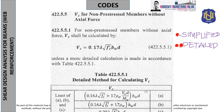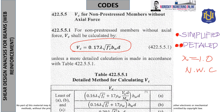Code 422.5.5.1 is used when there is no axial force — the simplified formula: Vc = 0.17λ√f'c·bw·d, where lambda = 1.0 for normal weight concrete.